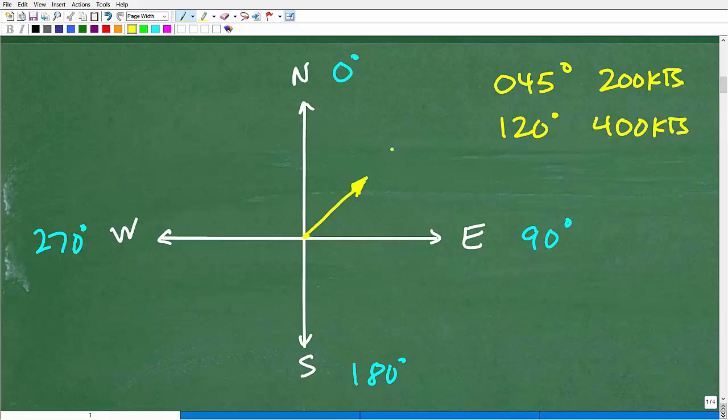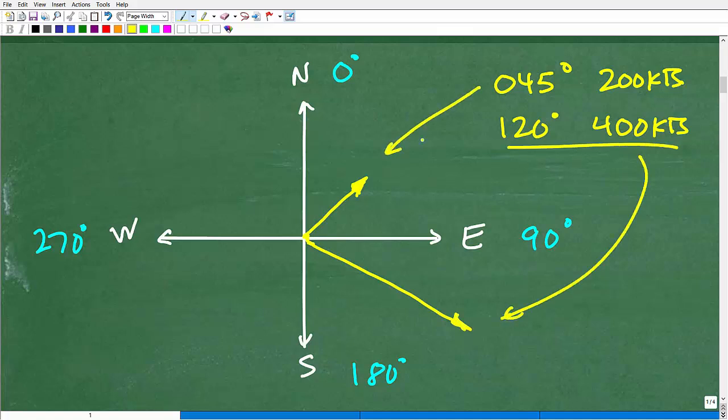Now, how about an airplane that's going, let's say, 120 degrees, but it's going 400 knots? What would that vector look like? You can see here, this is going 040. 120 degrees is over here. But if this is 200 knots, well, this vector is going to be double the length. So maybe something like this. So this would be this vector right here, and this would be this vector right here.